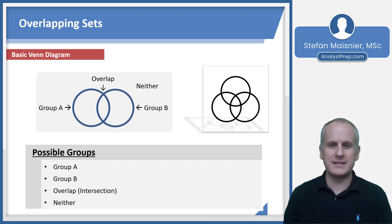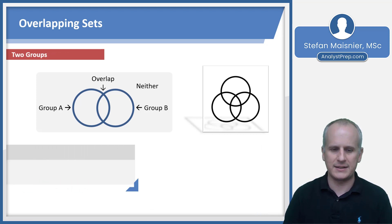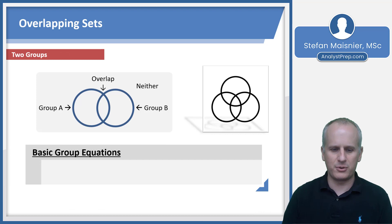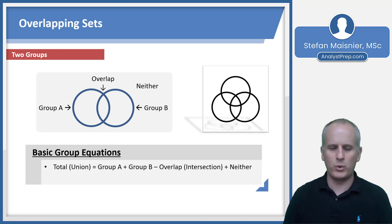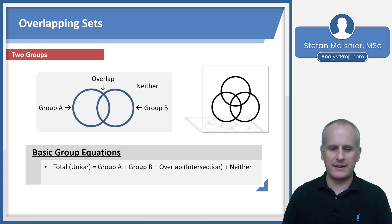You have the Venn diagram as a visual representation of what's happening, but you're not going to want to use a Venn diagram to solve on the Executive Assessment — it just takes too long. Understanding how the groups work will help us work through what is known as the group equation for overlapping sets. Our basic group equation for two groups takes advantage of what we just defined: the total number of people, known as the union, is equal to those in group A plus those in group B minus those in the overlap.